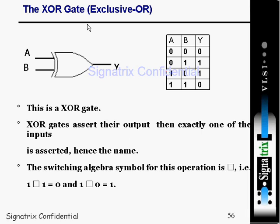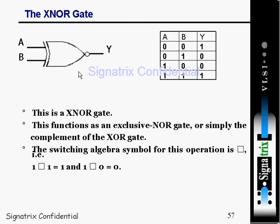Coming to the exclusive OR (XOR) gate: its output is 1 when exactly one of the inputs is 1; otherwise the output is 0. The XOR gate asserts its output when exactly one of the inputs is asserted. The switching algebra symbol for XOR: 1 XOR 1 = 0, and 1 XOR 0 = 1.